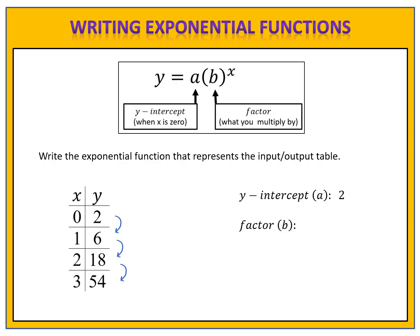Therefore the factor, or b-value, will be 3. But sometimes it's more difficult to figure out, so you can use this little formula: b equals the lower value divided by the upper value. When we go from 2 to 6, we take 6 divided by 2 and find 3. From 6 to 18, we take 18 divided by 6 and get 3. The same is true for the third pair: 54 divided by 18 is 3, so the factor is 3.